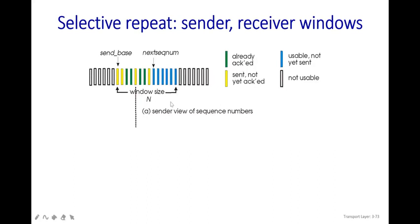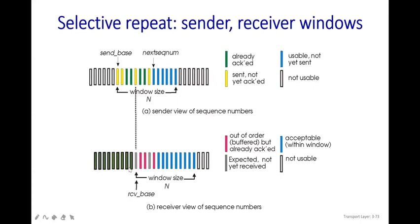This is the sender view of the sequence number space. In the receiver view, some packets are expected but not yet received. Gray-colored packets in the receiver view have not been received and are not acknowledged — they must be saved in the receive base variable. Because those packets are missing, subsequent packets arrive out of order — the pink-colored packets have been received but cannot yet be acknowledged since they are out of order.